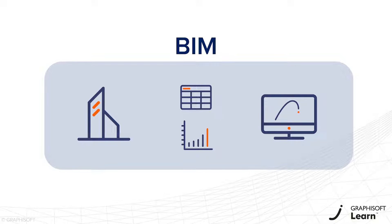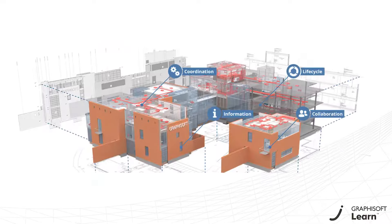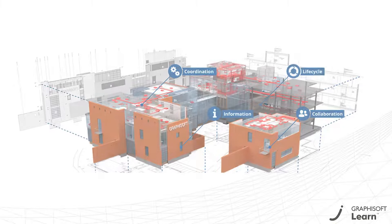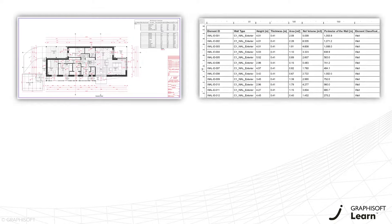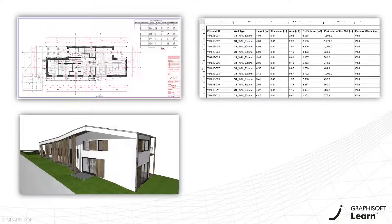We refer to BIM as a virtual building consisting of precise 3D geometry that contains lots of information about the project. Its actual physical representation and content can differ depending on the purpose of utilization. The model and the metadata together build a complex database we call BIM. It can be used for construction documentation, building material quantity takeoffs, different types of building simulations, visualization and more.